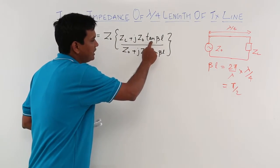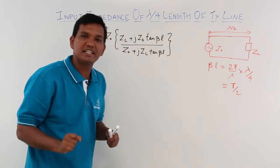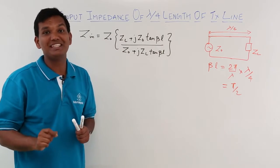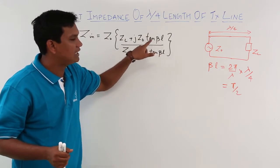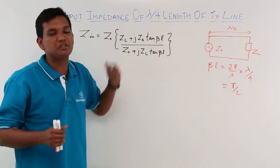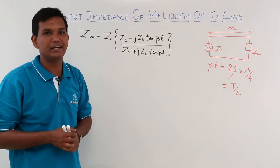It means it becomes tan pi by 2. And what is tan pi by 2? Tan pi by 2 is infinity. So this quantity is actually causing issues because the tan term itself is becoming infinity. How will I take care of this?